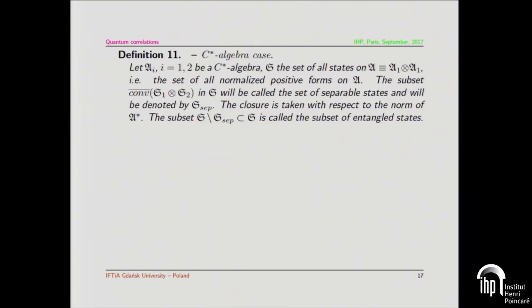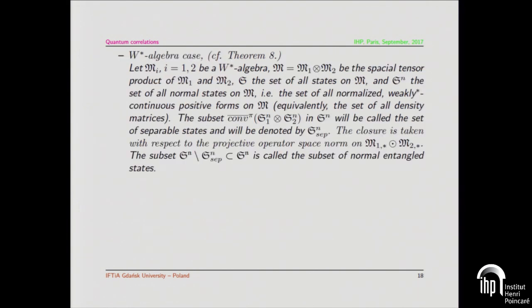This is just the definition of what separable states means. Separable states is the closure of the convex hull of simple tensors of states, and the rest is a subset of entangled states. When you have the second option, you do exactly the same, but the difference is that the closure should be taken with respect to the operator space projective norm.